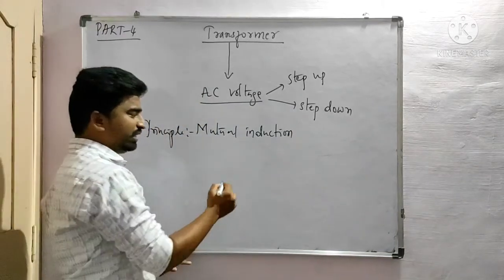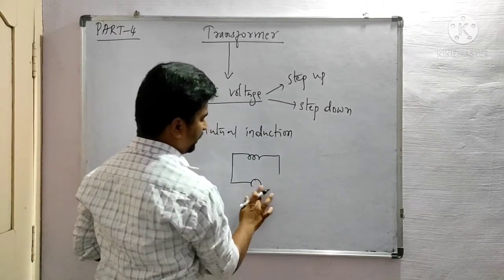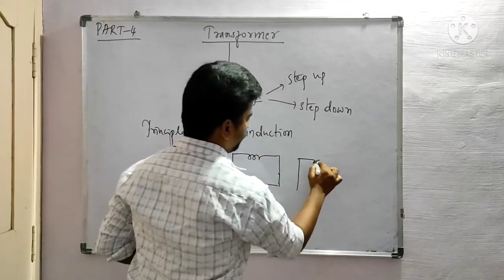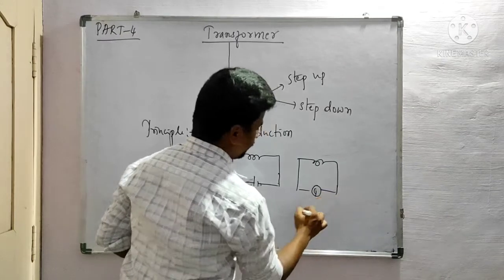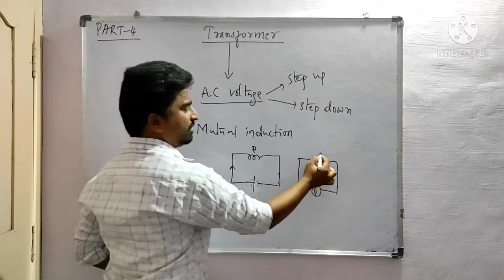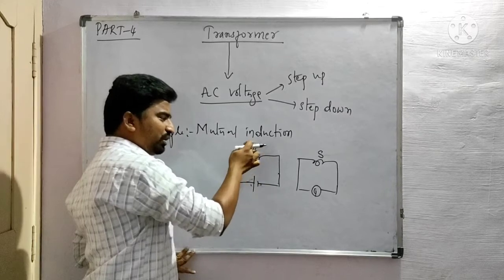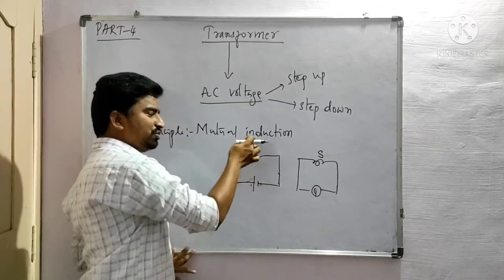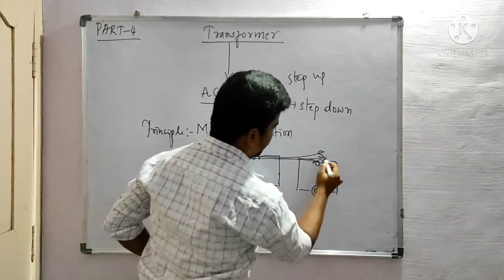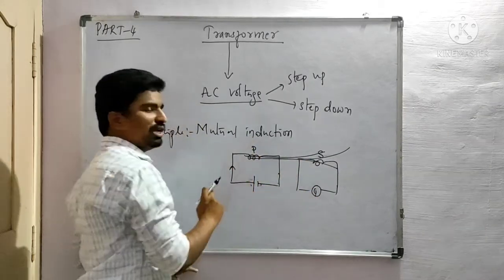What is mutual induction? For example, there is one coil connected to a source — this is the primary coil. Another coil connected to a galvanometer — this is the secondary coil. When current flows through the primary coil, the magnetic flux through it changes. When the magnetic flux through the primary coil changes, the magnetic field lines linked with the secondary coil also change, so that an EMF is induced in the secondary coil. This is called mutual induction.